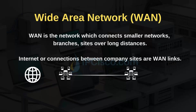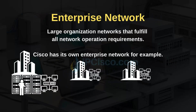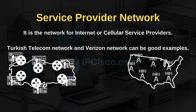For example, the internet and connections between company site networks are examples of WANs. Enterprise networks are the networks of large companies — large organization networks that fulfill all network operation requirements. For example, Cisco has its own enterprise network. In these networks, enterprises have their own data centers or network rooms, and they also have network experts for the operation of their networks.